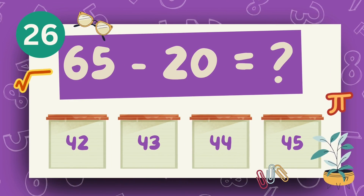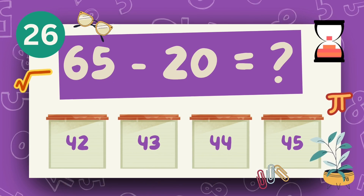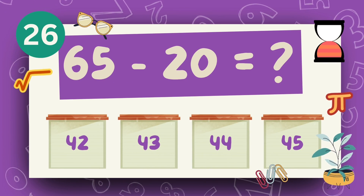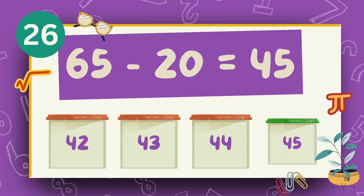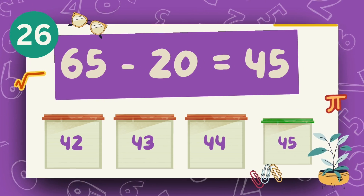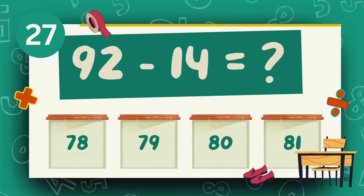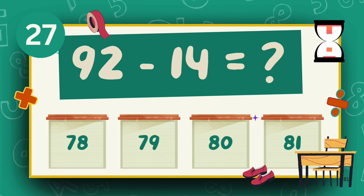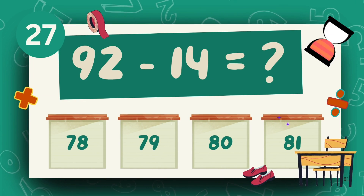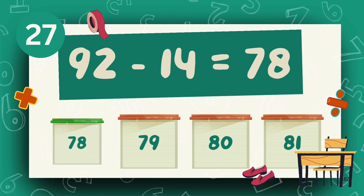What is 65 minus 20? The answer is 45. What is 92 minus 14? The answer is 78.